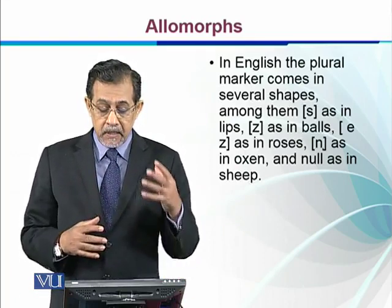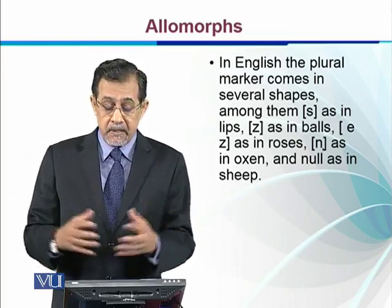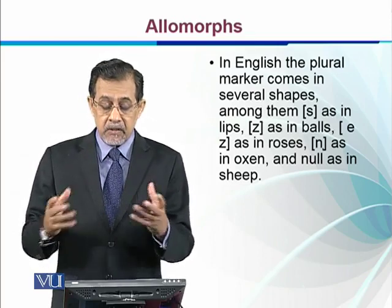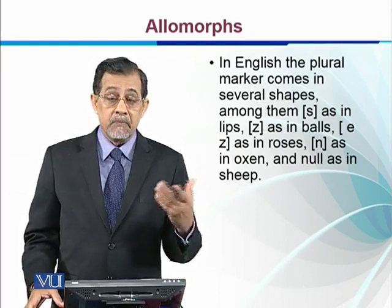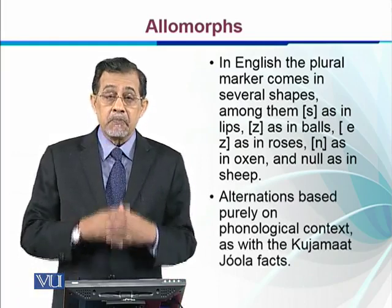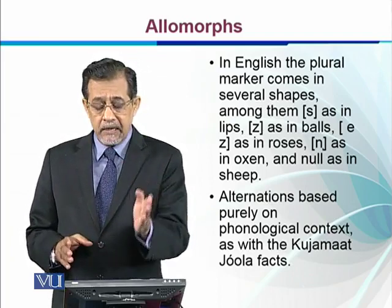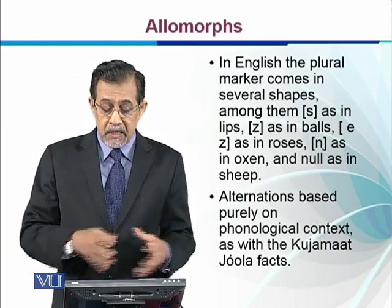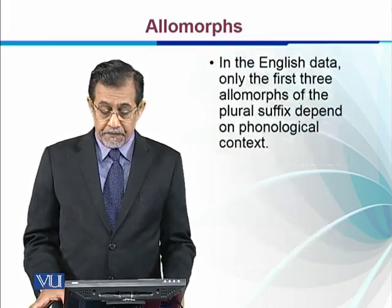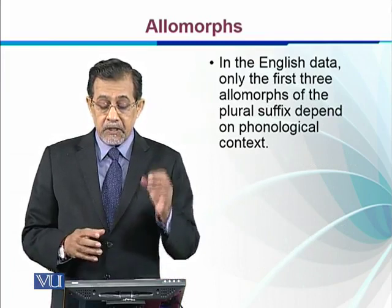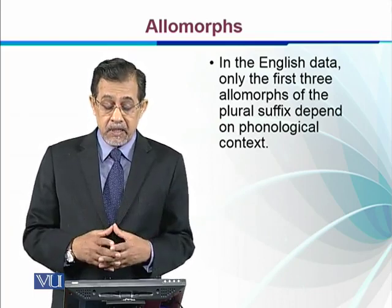In English, the plural marker comes in several shapes: /s/ as in 'lips', /z/ as in 'balls', /ɪz/ as in 'roses', /-en/ as in 'oxen', and null as in 'sheep' — a zero morpheme. The alternation based purely on phonological context tells us when to use /s/, when to use /z/, and when to use /ɪz/. In the English data, only the first three allomorphs of the plural suffix depend on phonological context; the others are lexical.